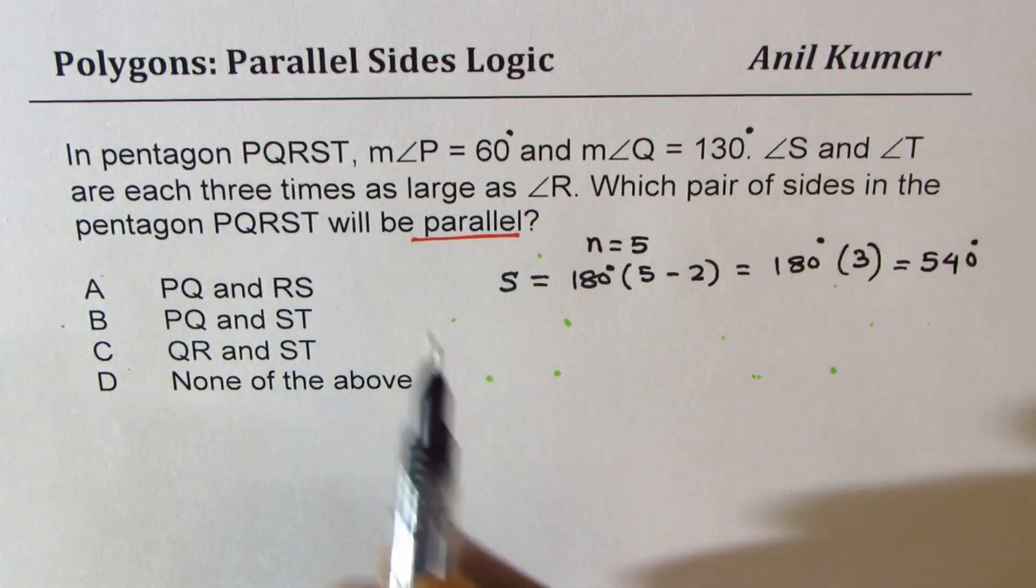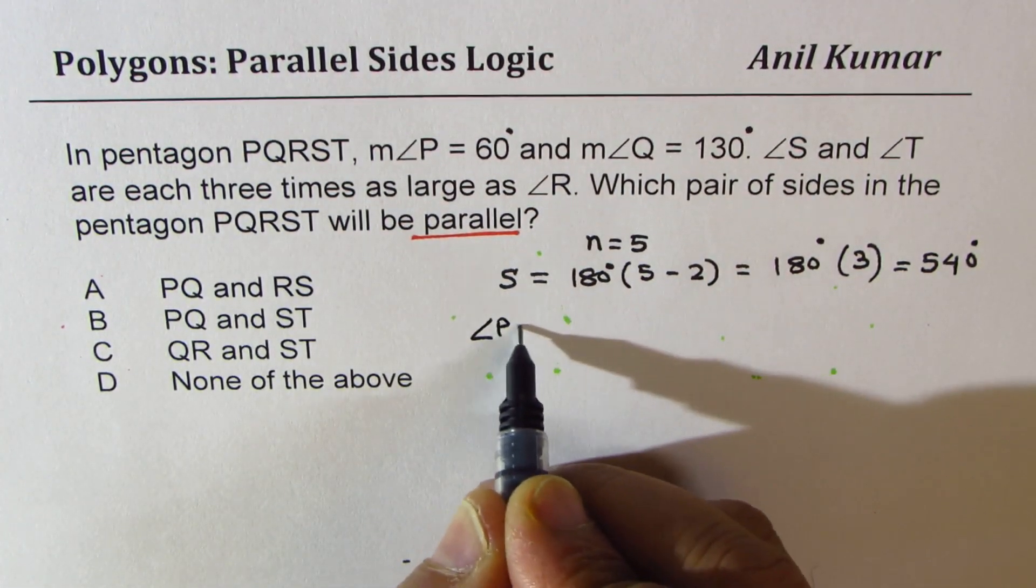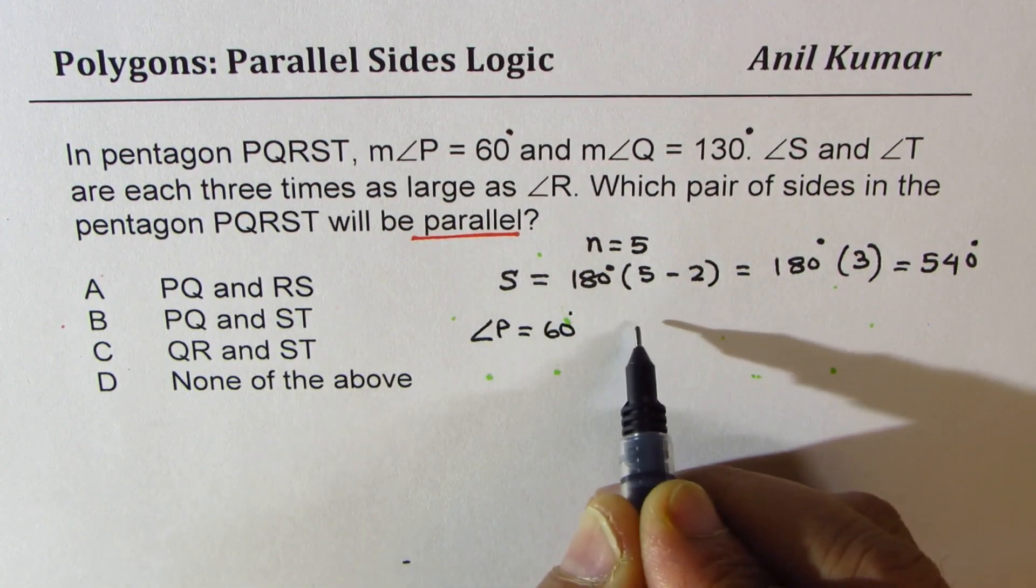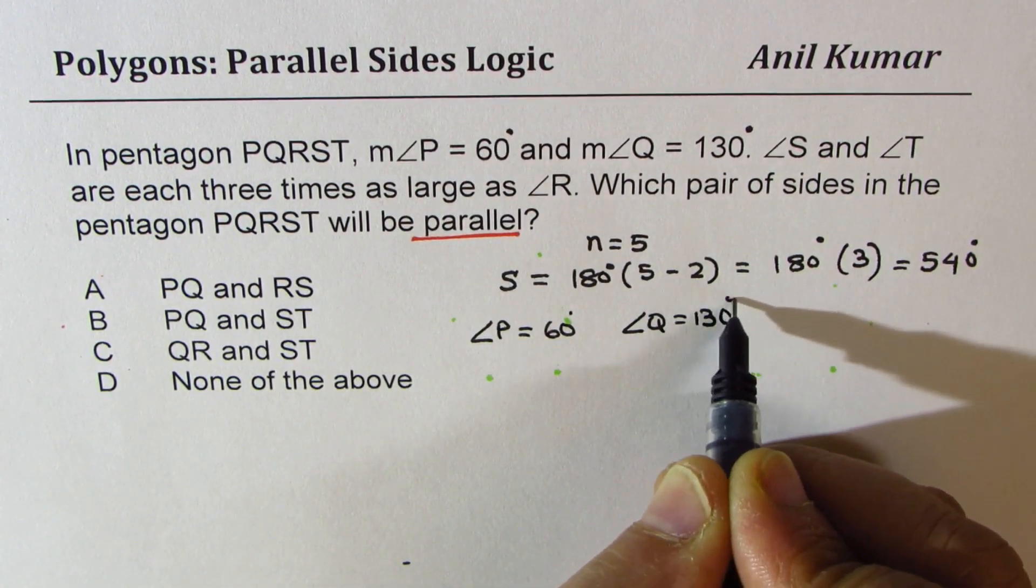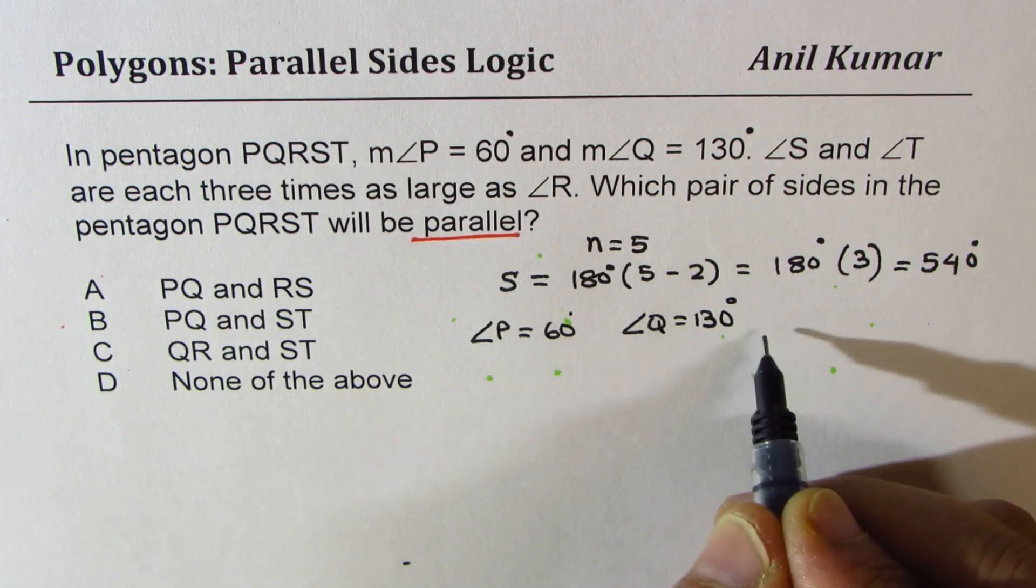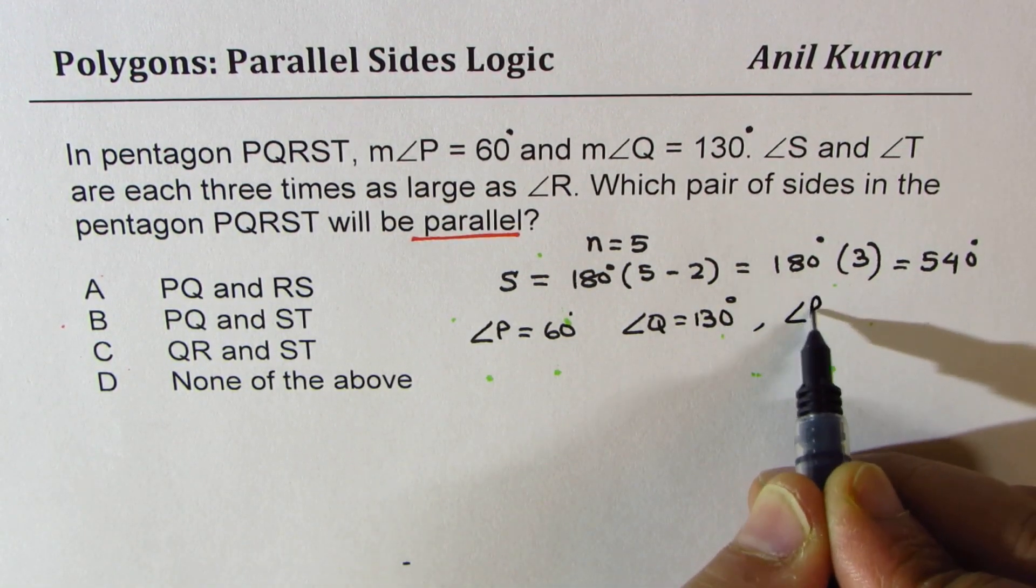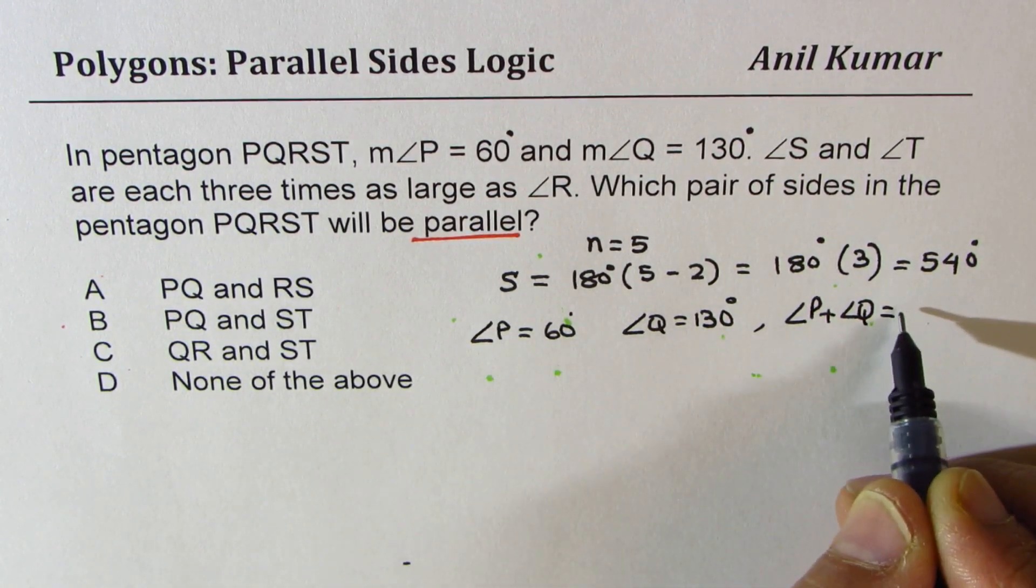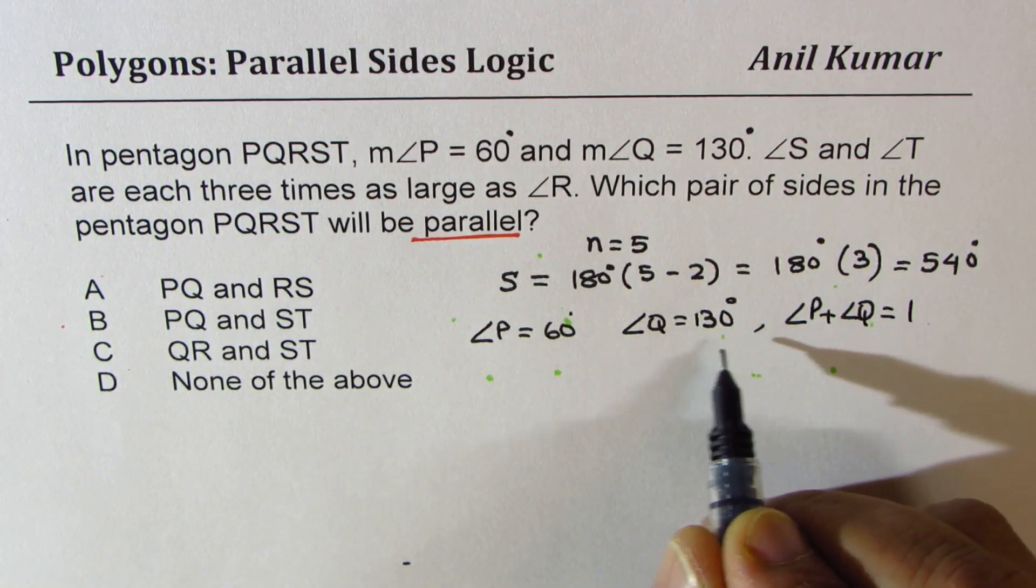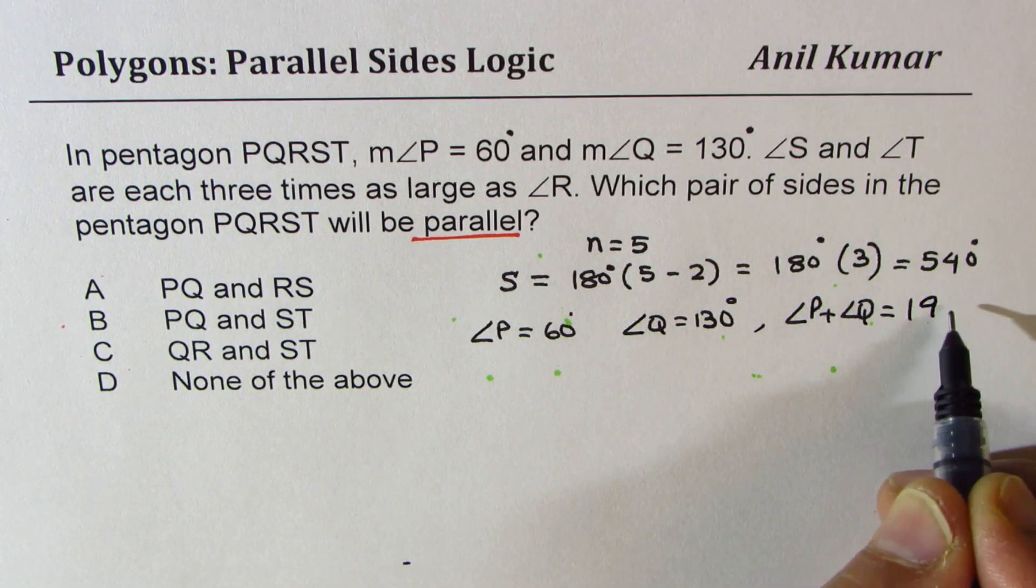Now what are we given? We are given that angle P is equal to 60 degrees. Measurement of angle Q is 130 degrees. So these two, that means angle P plus angle Q is equal to 190. So we just add this up, 190 degrees.